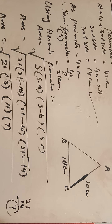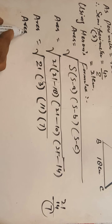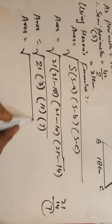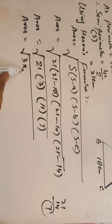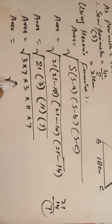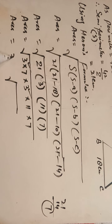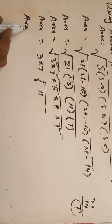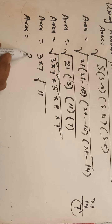So the area equals the square root of 3 times 7 times 11 times 3, which simplifies. Under the root we have 3 times 3 times 7 times 11. Taking out the pair of 3s, we get 3 times the square root of 77, or 21 root 11.